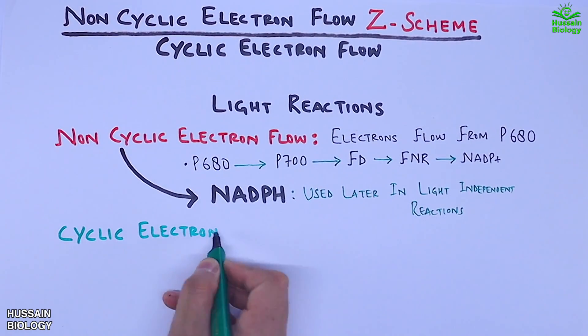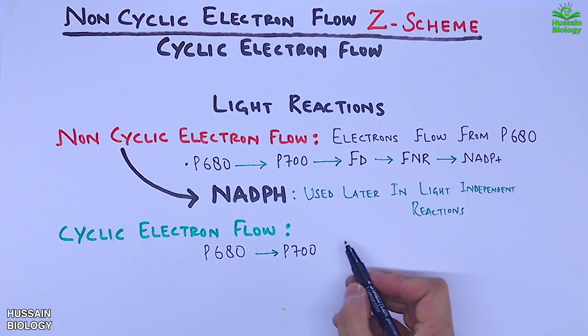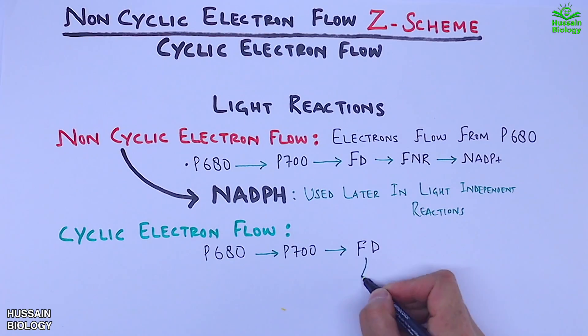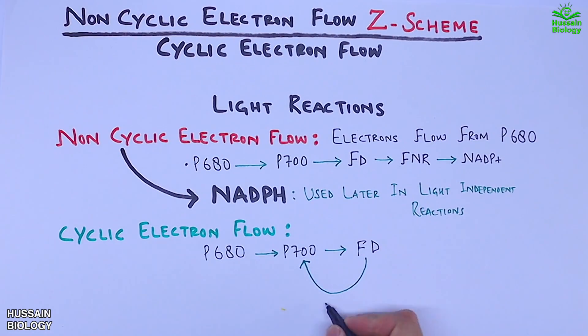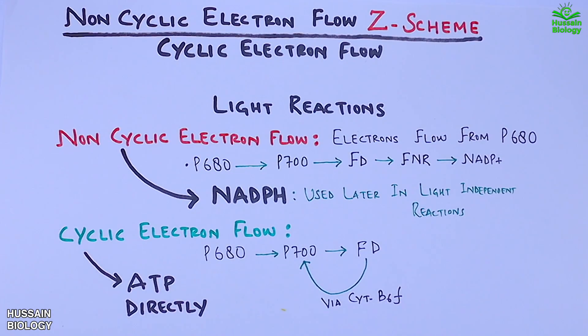Then we have cyclic electron flow where electrons flow from P680 to P700 to ferredoxin, and then from here the electrons flow back to P700 through cytochrome b6f complex, thus creating a cyclic electron flow. From this electron flow we get direct generation of ATPs where protons are used to generate ATPs through ATP synthase.